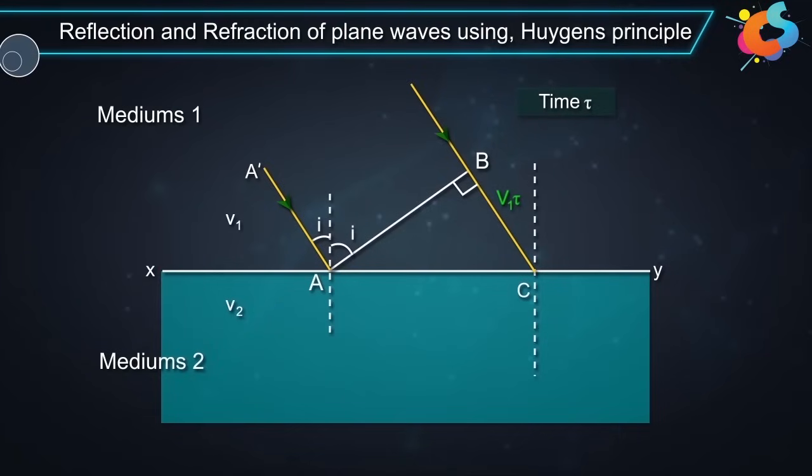of the refracted wave front from A, let us draw a sphere of radius V2 tau from point A in medium 2.